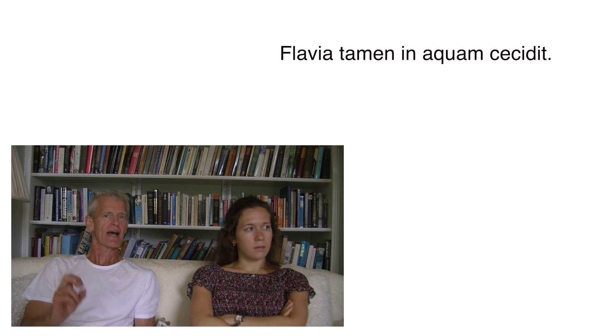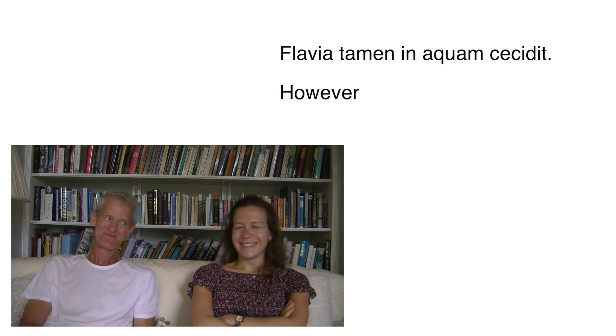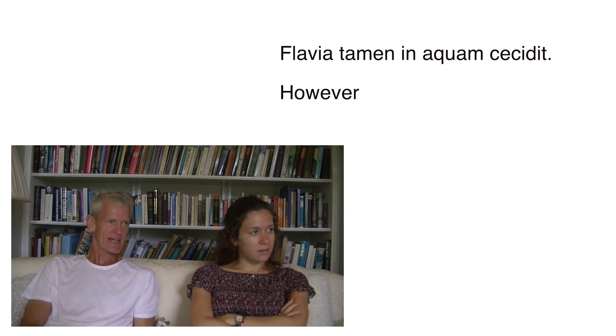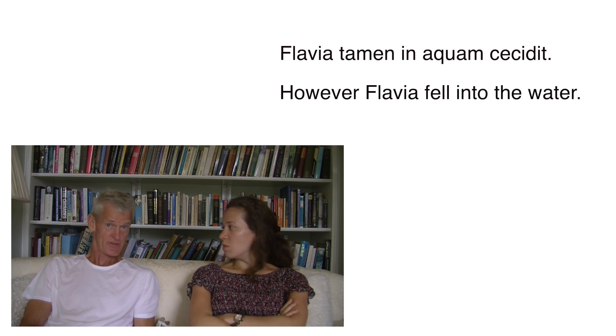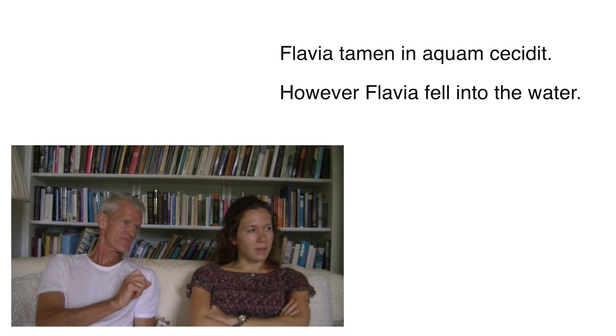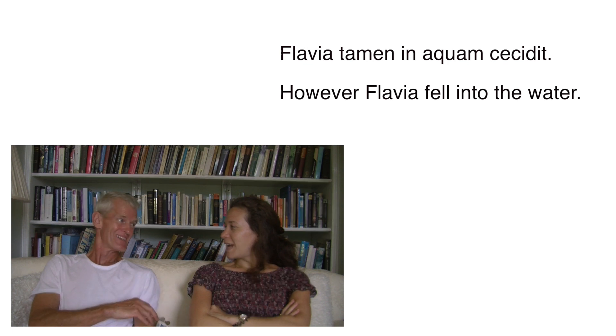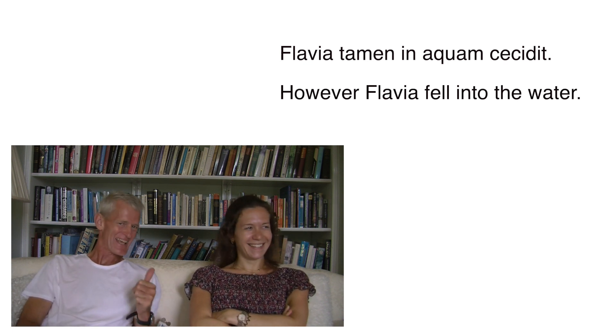'Flavia tamen in aquam cecidit.' Izzy spots 'tamen' — however. Flavia is the subject. 'Cecidit' — she fell. 'In' plus accusative means into, so into the water. The verb 'cecidit' comes from 'cado, cadere, cecidi, casum' — I fall — which is a third conjugation verb with an unpredictable perfect form. Unless you've learned it, you'd have no idea. So: Flavia, however, fell into the water.